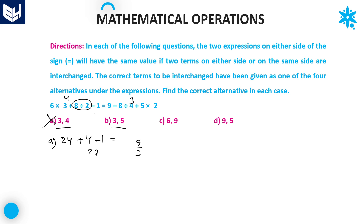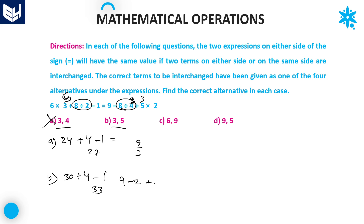Option B: 3 and 5 are interchanged. The left hand side: 6 into 5 is 30, plus 4 is 34, minus 1 is 33. For the right hand side: 8 by 4 equals 2, then 9 minus 2 plus 3 into 2 gives 6. 33 is not equal to 6, so eliminate option B.